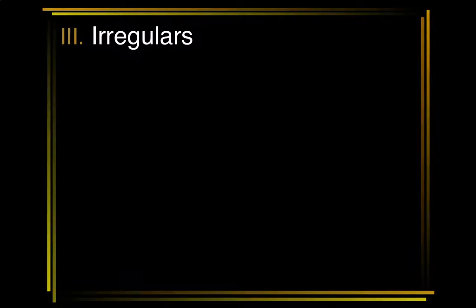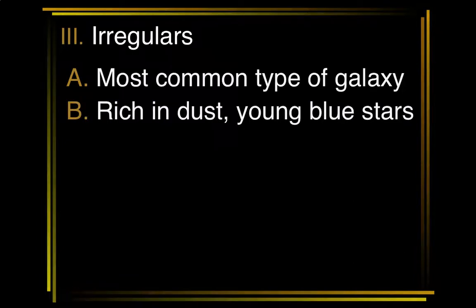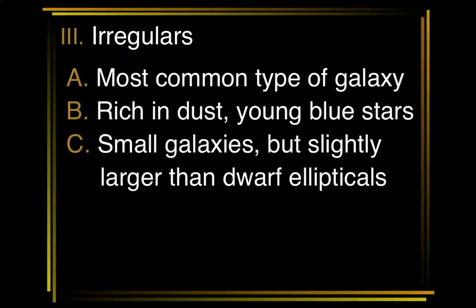If you include lenticulars as a separate major category, that brings us to the fourth major category: irregular galaxies. No surprise, they're the most common type of galaxy. Nature seems to prefer making small things — more small asteroids than big, more small stars than big stars, more small animals than big animals. Irregular galaxies are the most common, and even though they're not as photogenic compared to spirals, they have a lot of dust and gas, which means they're making a lot of new stars, supernovae, and exploding stars.